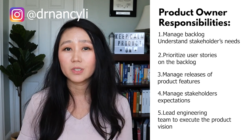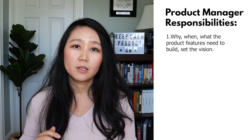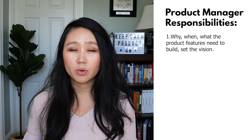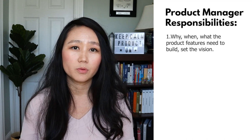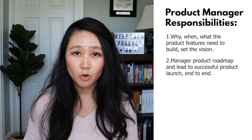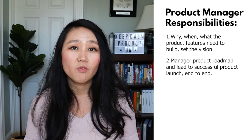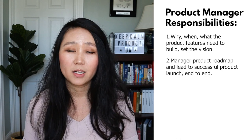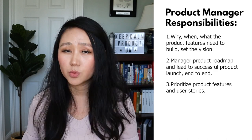On the other hand, the product manager is responsible for guiding a product to success. They lead a cross-functional team working on a product and improving its features. Product managers have five responsibilities: number one, the product manager decides the why, what, and when to launch a product from concept to execution — they set the vision and lead the whole team to execute on the grand vision. Number two, the product manager manages the product roadmap through successful product launch, responsible for the end-to-end journey from concept to getting the product into customers' hands. Number three, the product manager also prioritizes product features and user stories — similar to the product owner.